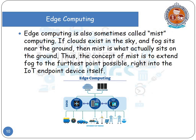Finally, edge computing, also sometimes called mist computing. If the cloud exists in the sky and fog sits near the ground, edge computing actually sits on the ground — meaning the computation process is done within the device itself. The concept of mist extends fog to the furthest point possible, right into the IoT endpoint device itself.